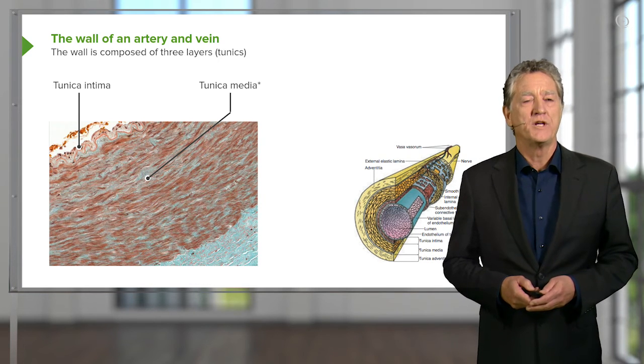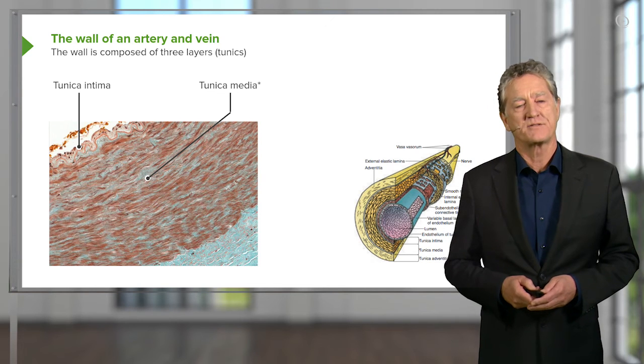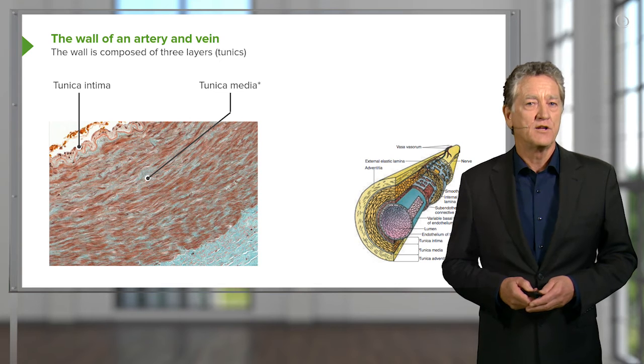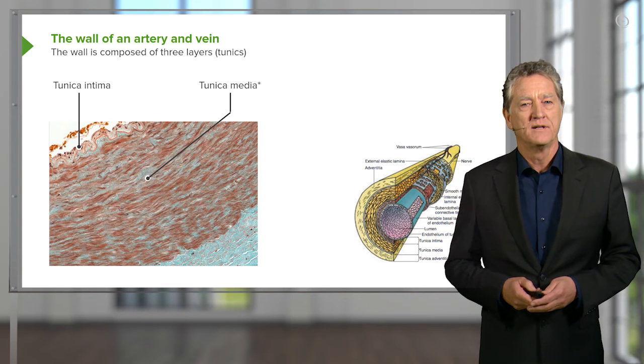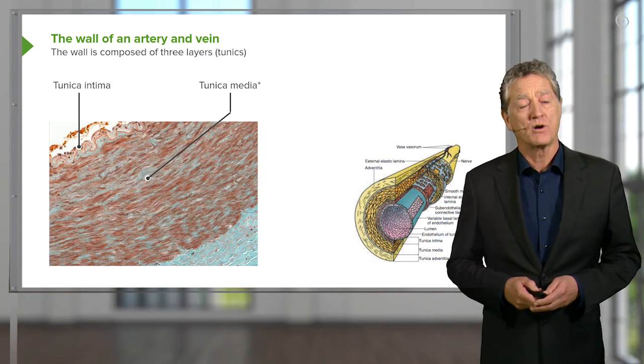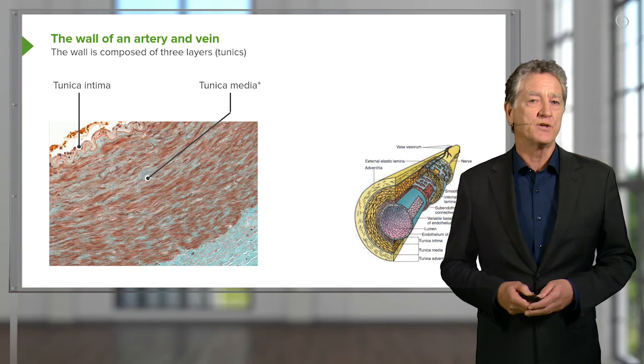Conversely, when you want to divert blood away from certain parts of the body, then that layer can contract. Smaller lumen, therefore less flow of blood. And that contraction and relaxation can be controlled by nerves of the autonomic nervous system.